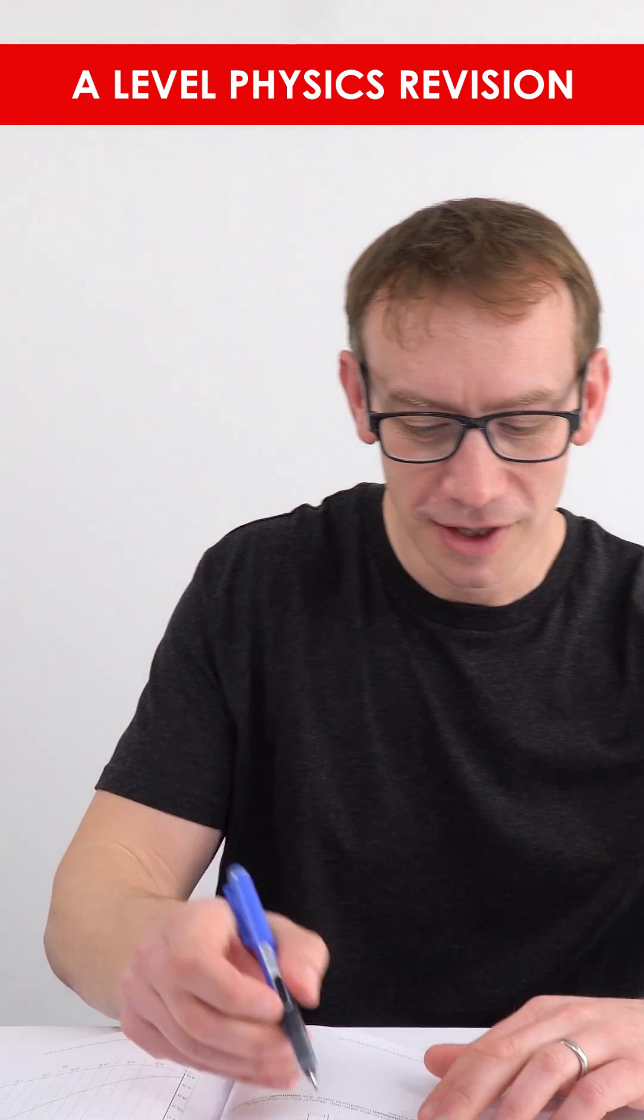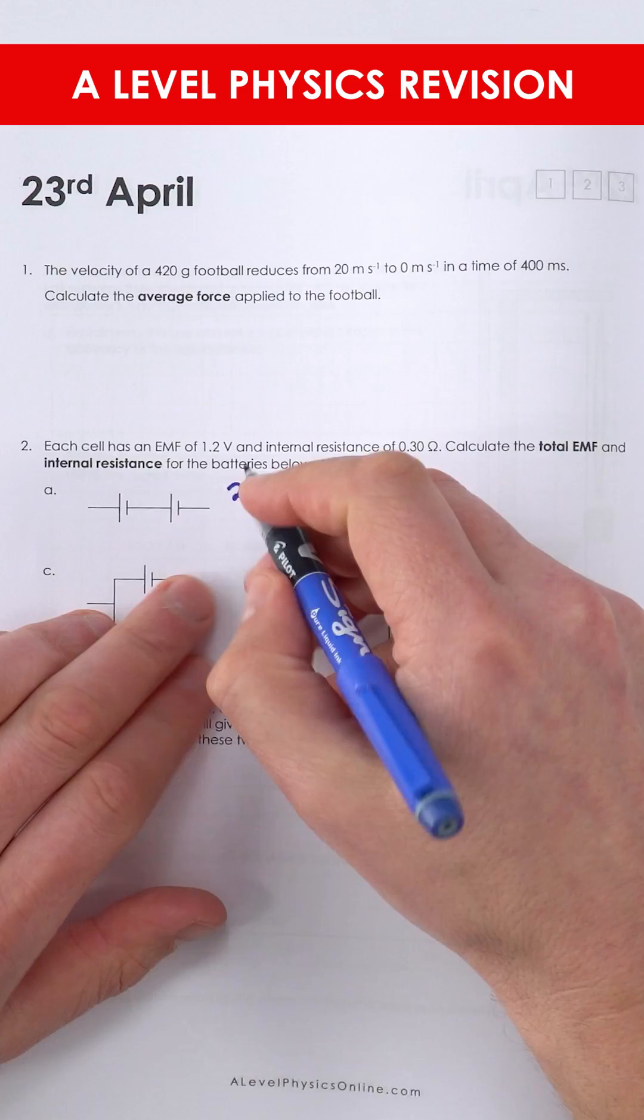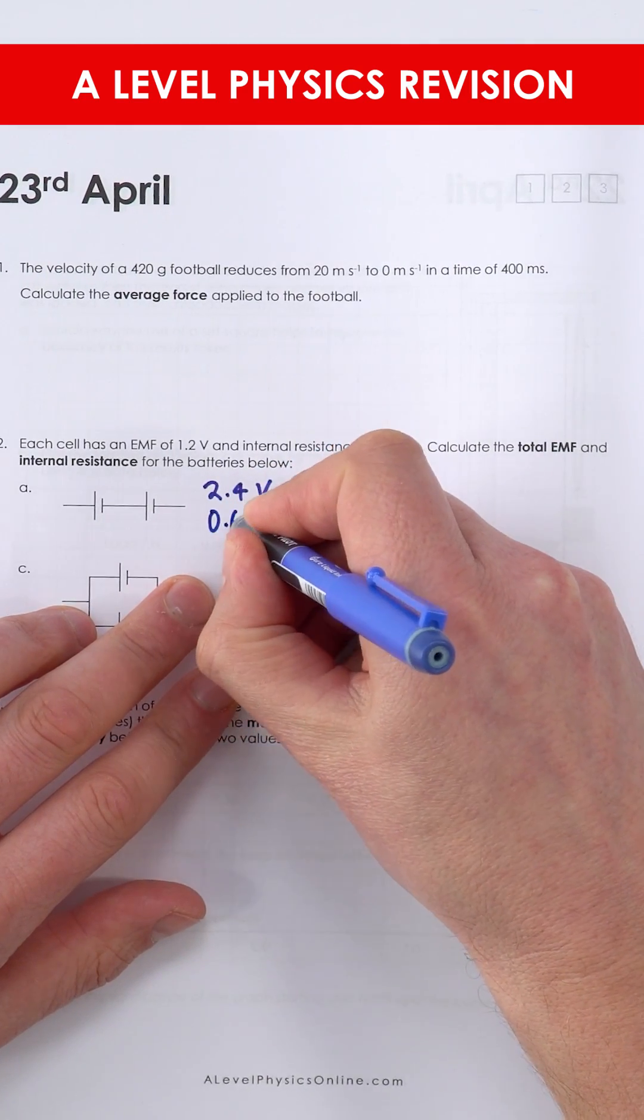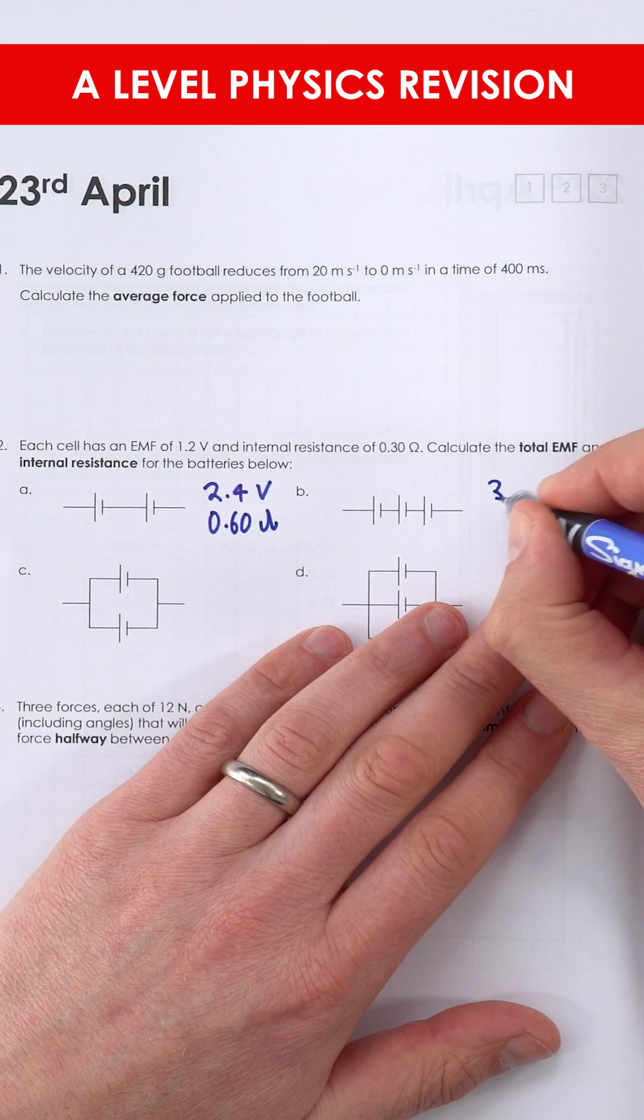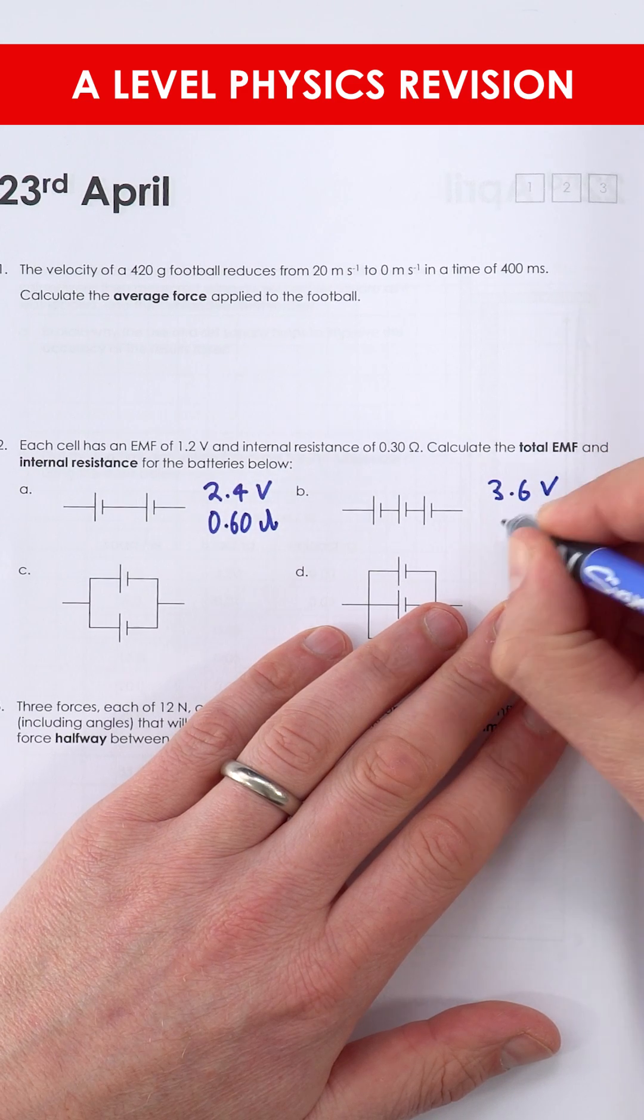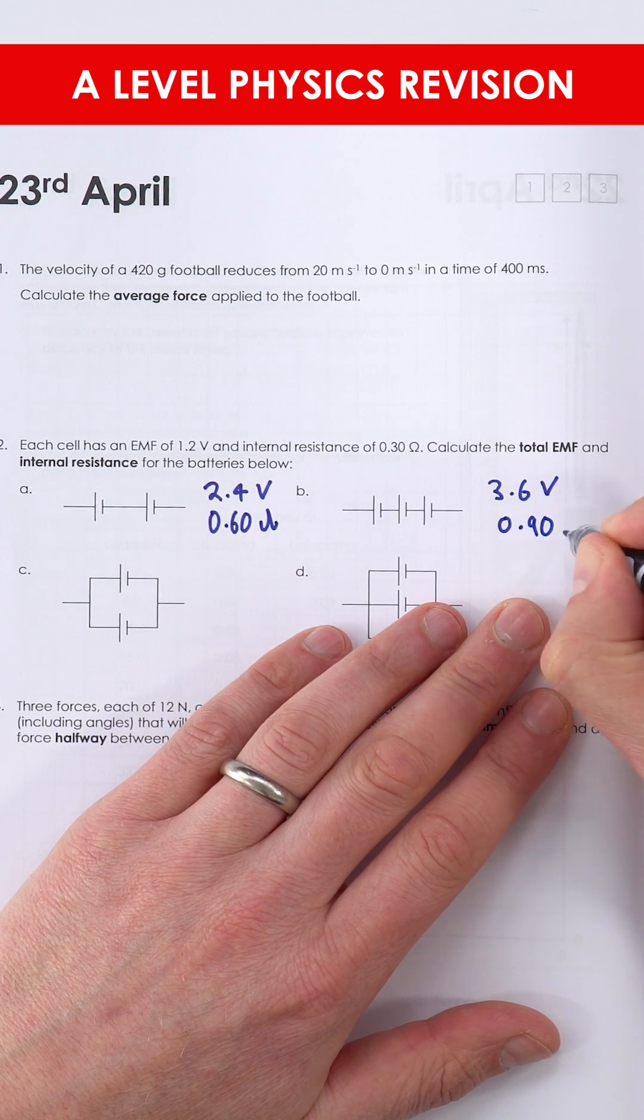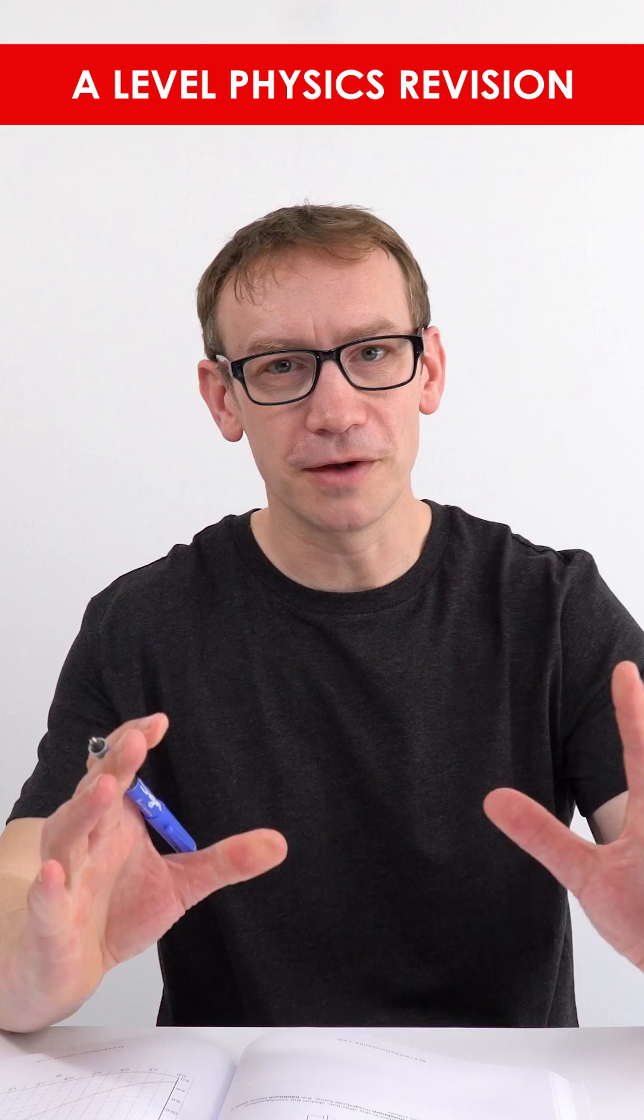we're going to add up the total resistance as 0.3 plus 0.3 which is 0.60 ohms. If we've got three of them, that's going to be an EMF of 3.6 volts and 0.90 ohms. All straightforward so far.